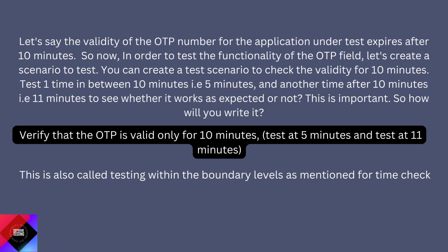Let's say the validity of the OTP number for the application under test expires after 10 minutes. In order to test the functionality of the OTP field, you can create a test scenario to check the validity for 10 minutes — test once within 10 minutes, say at 5 minutes, and another time after 10 minutes, say at 11 minutes, to see whether it works as expected or not. How will you write it? 'Verify that the OTP is valid only for 10 minutes — test at 5 minutes and test at 11 minutes.' This is also called testing within the boundary levels as mentioned for time check.